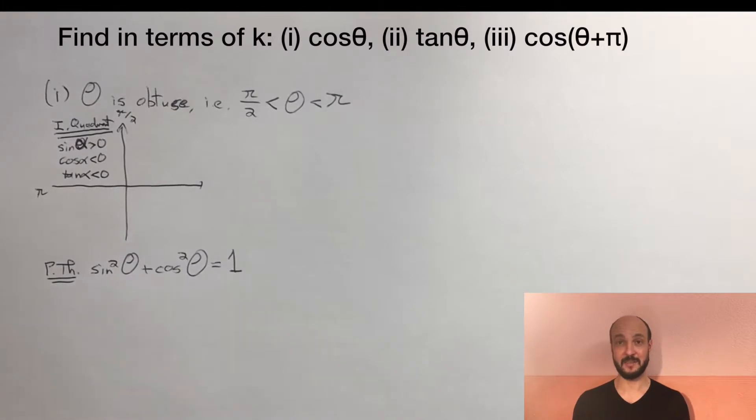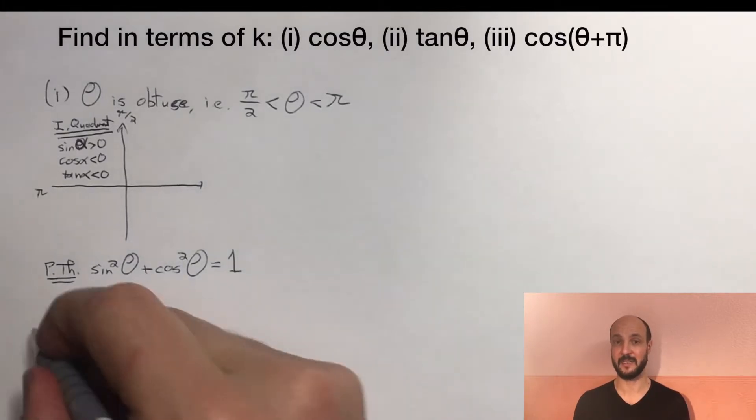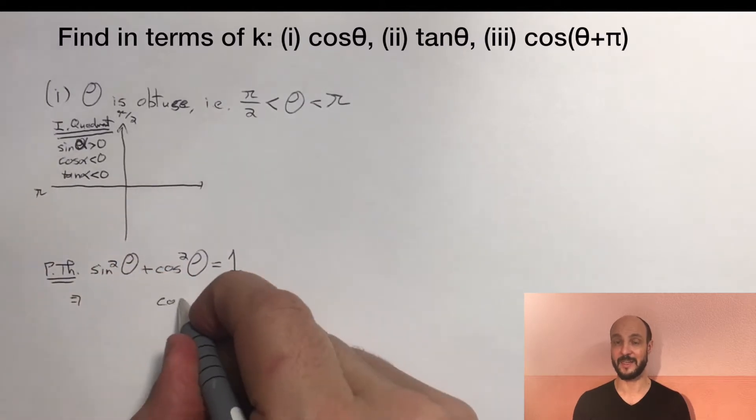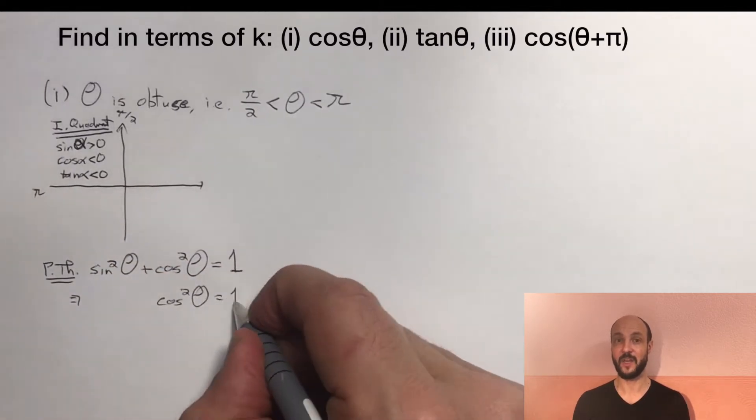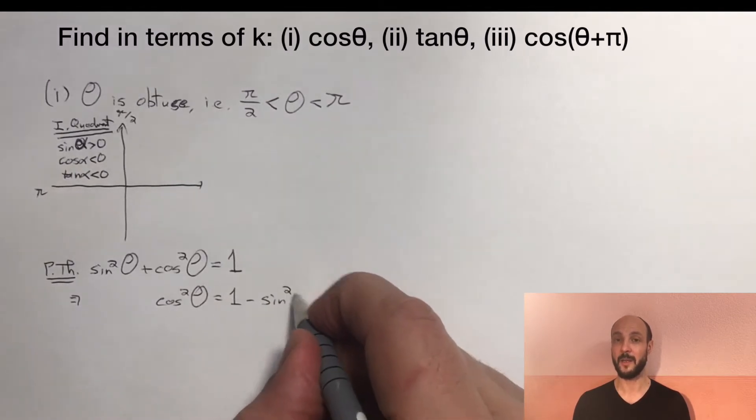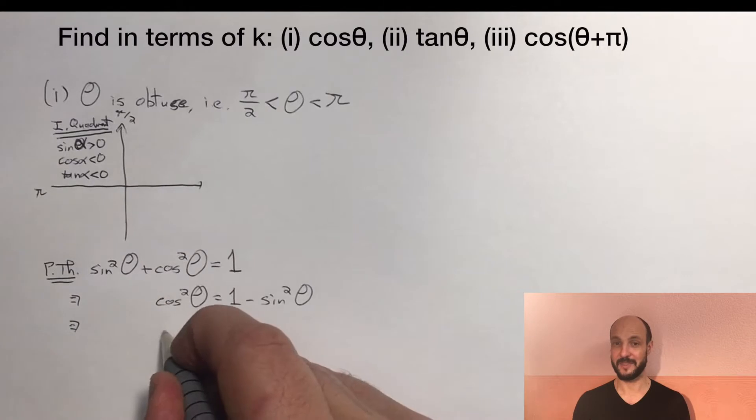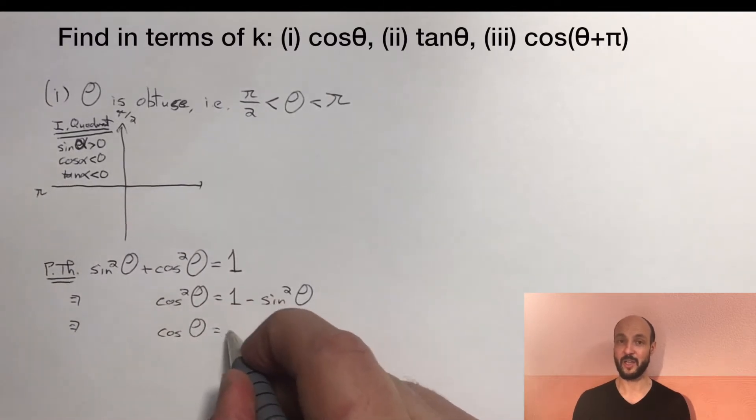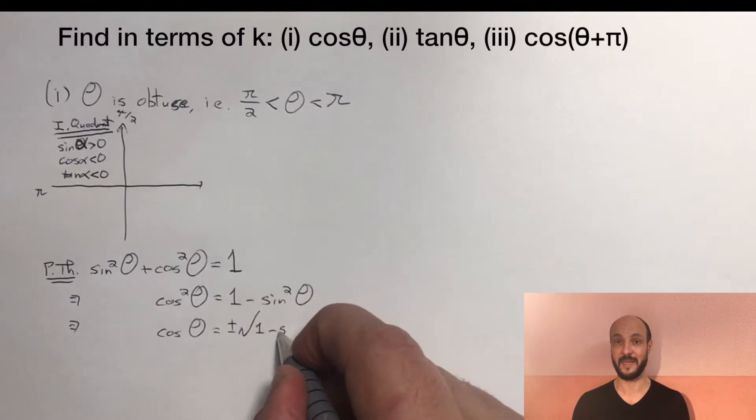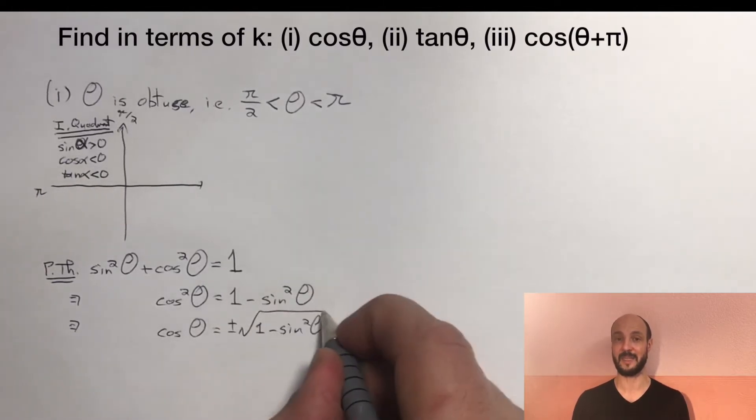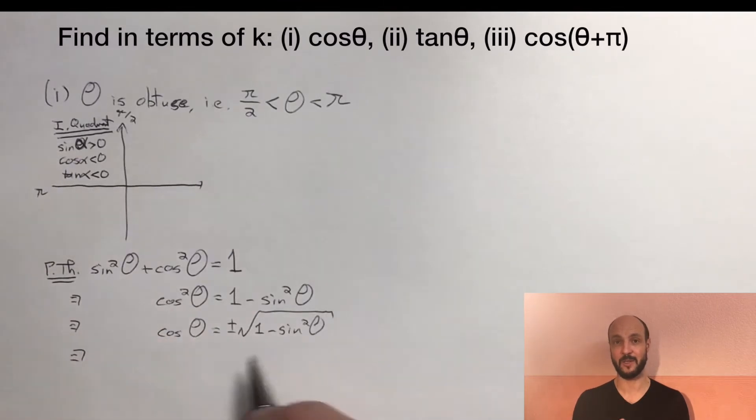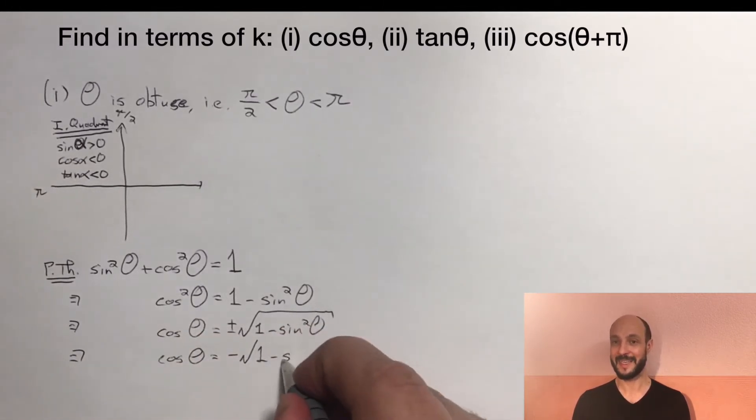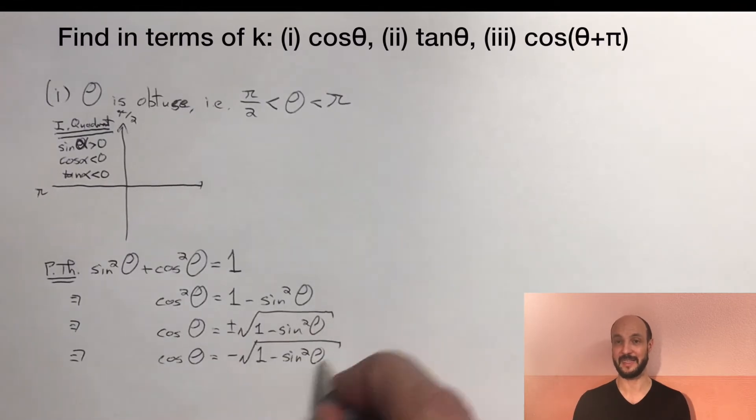So if we write that out, sine squared of theta plus cosine squared of theta equals 1, we can rearrange it by subtracting sine squared from both sides to give cosine squared of theta equals 1 minus the sine squared of theta. Now if we take the square root of both sides, we've got cosine of theta is equal to plus or minus the square root of 1 minus sine squared theta. And we already said because we're in the second quadrant, the cosine is going to be negative. So cosine theta equals minus the square root of 1 minus k squared.